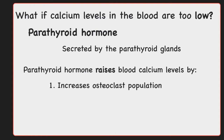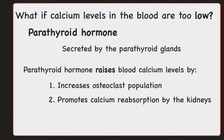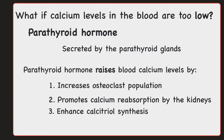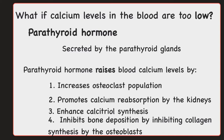Parathyroid hormone also promotes calcium reabsorption by the kidneys. Things that are in the kidneys are usually going to be lost in the urine unless they are reabsorbed. So calcium that would be leaving the body as waste is going to be triggered by parathyroid hormone to be reabsorbed by the kidneys, bringing it back into the bloodstream and increasing calcium levels. It also enhances calcitriol synthesis, which will eventually increase calcium levels in the blood. And then it inhibits collagen synthesis by the osteoblasts, which in turn inhibits bone deposition — slowing down the building up of bone and increasing the breaking down of bone so that we can increase calcium levels in the blood.